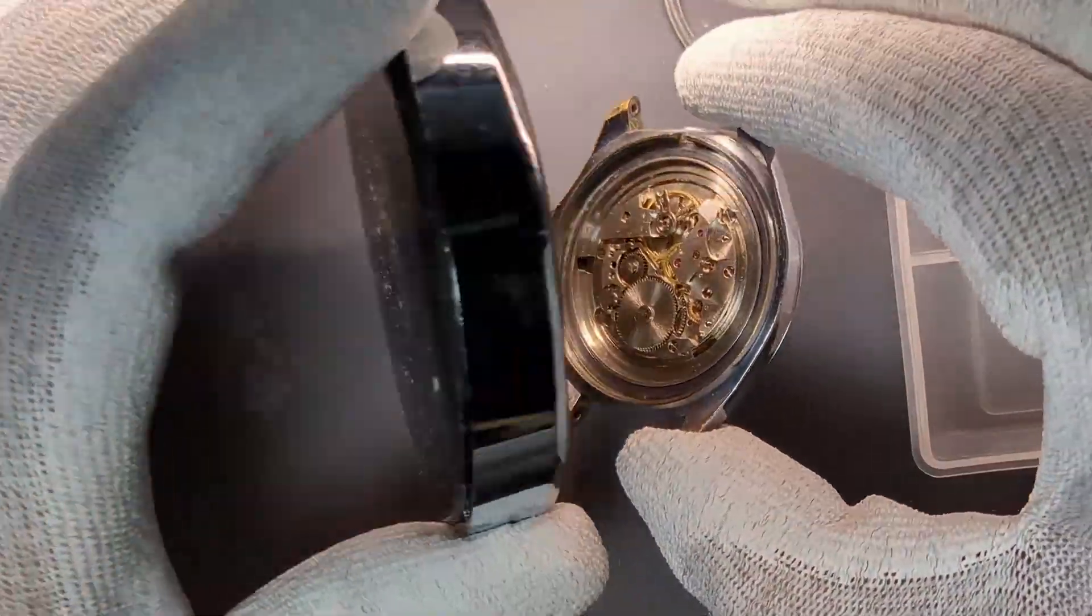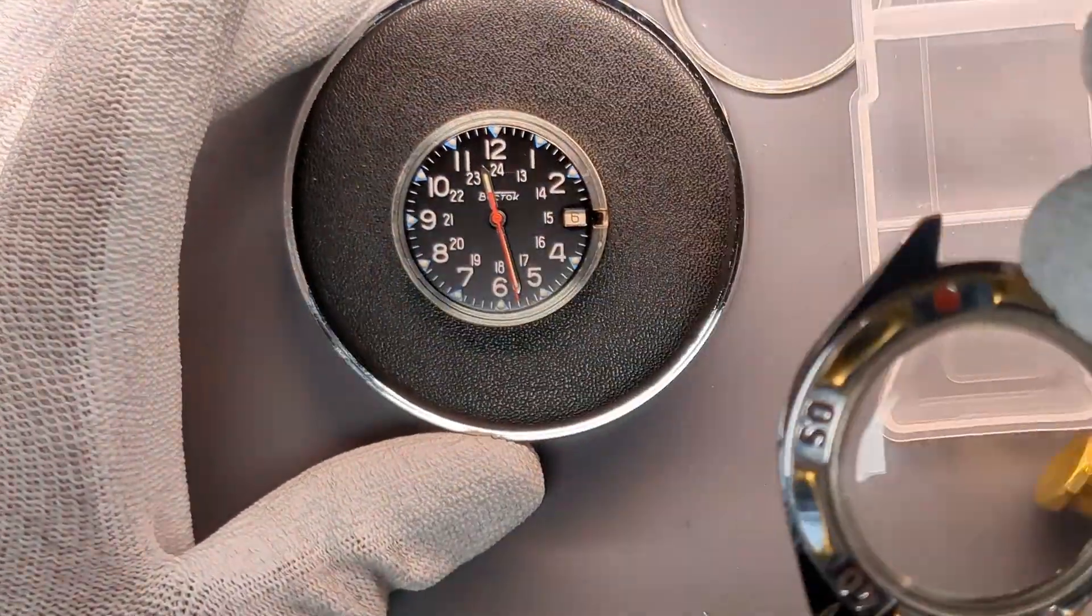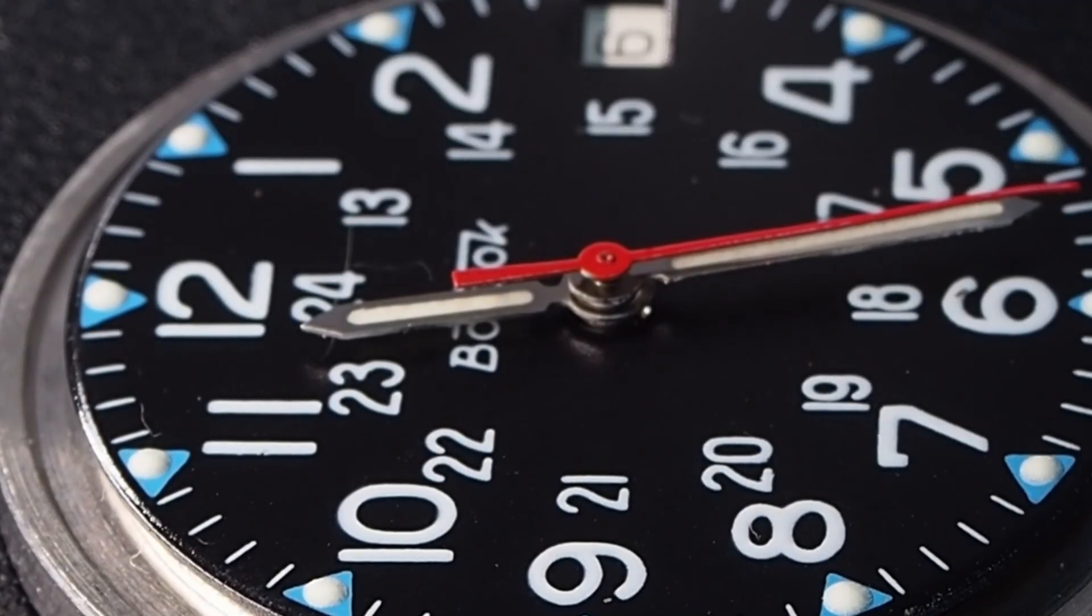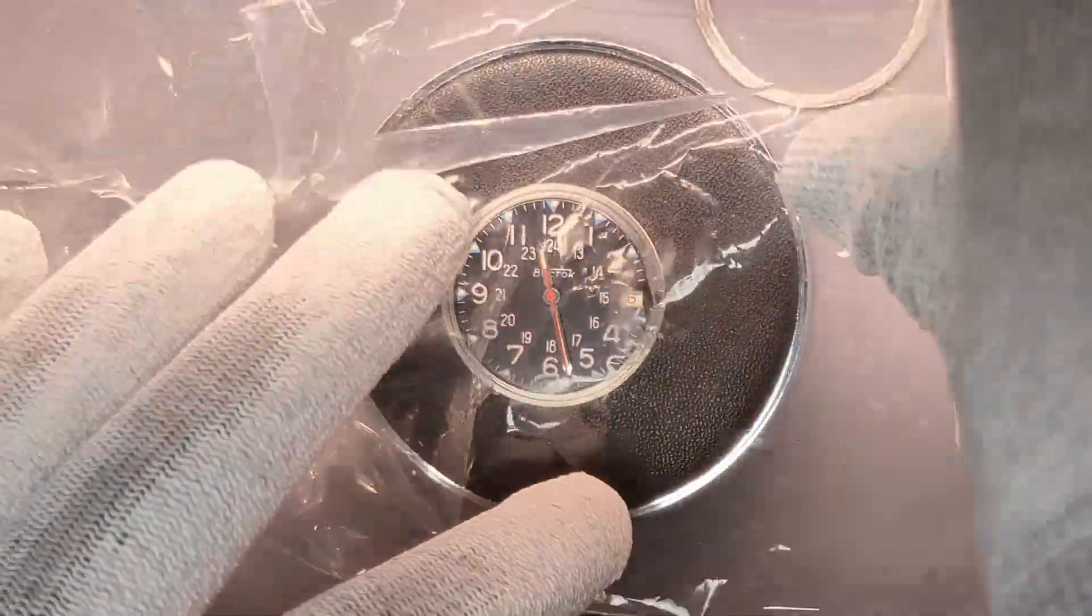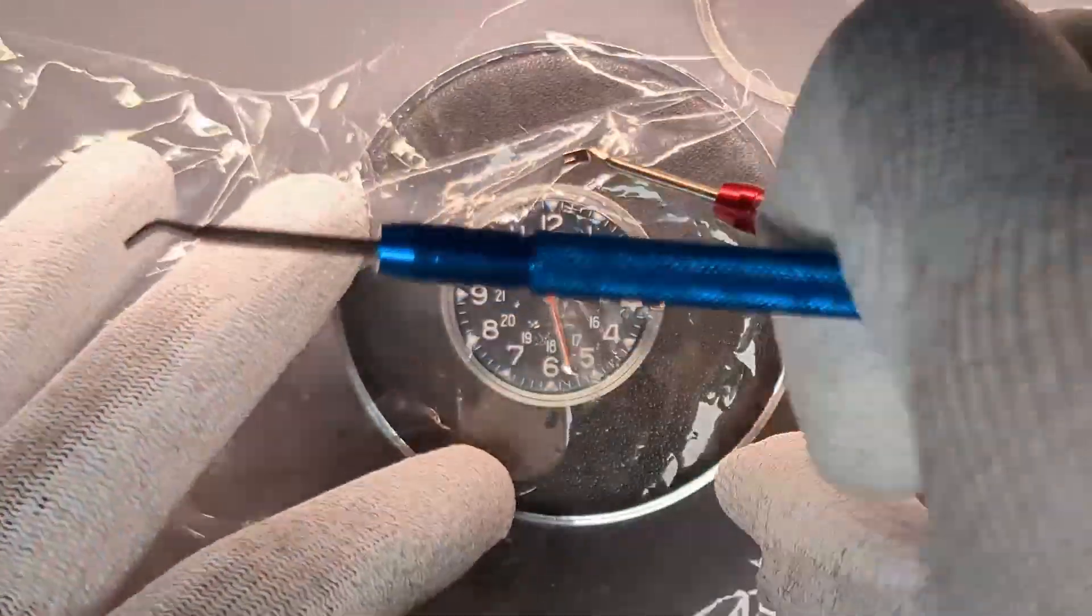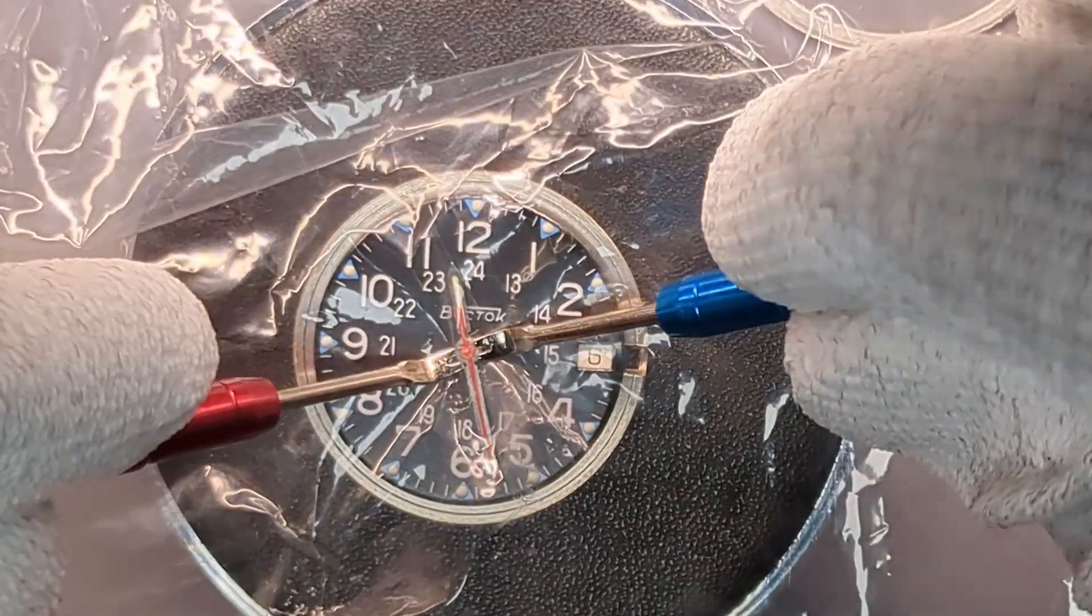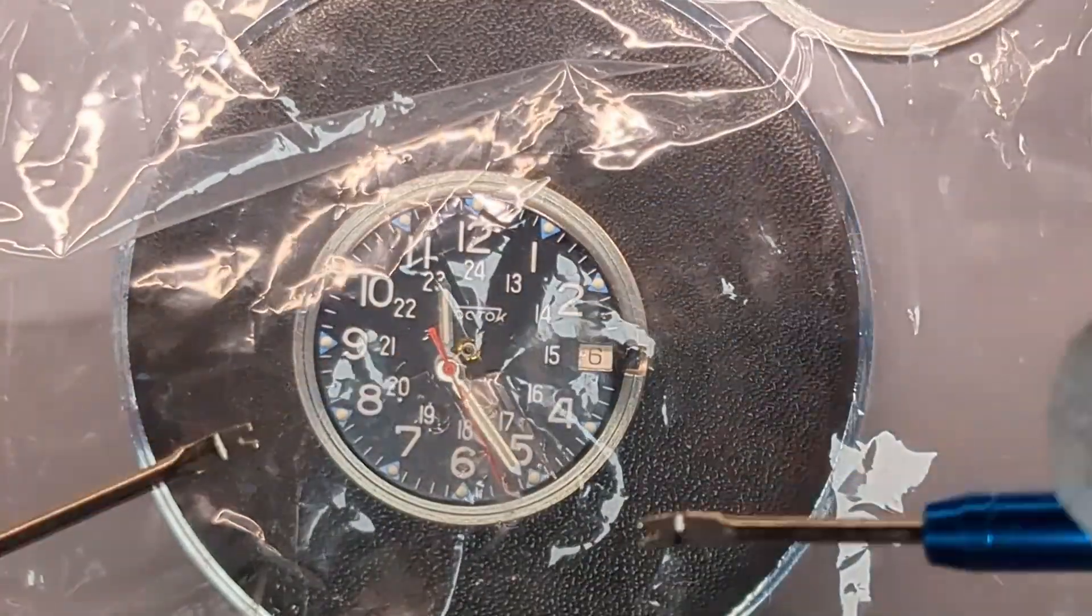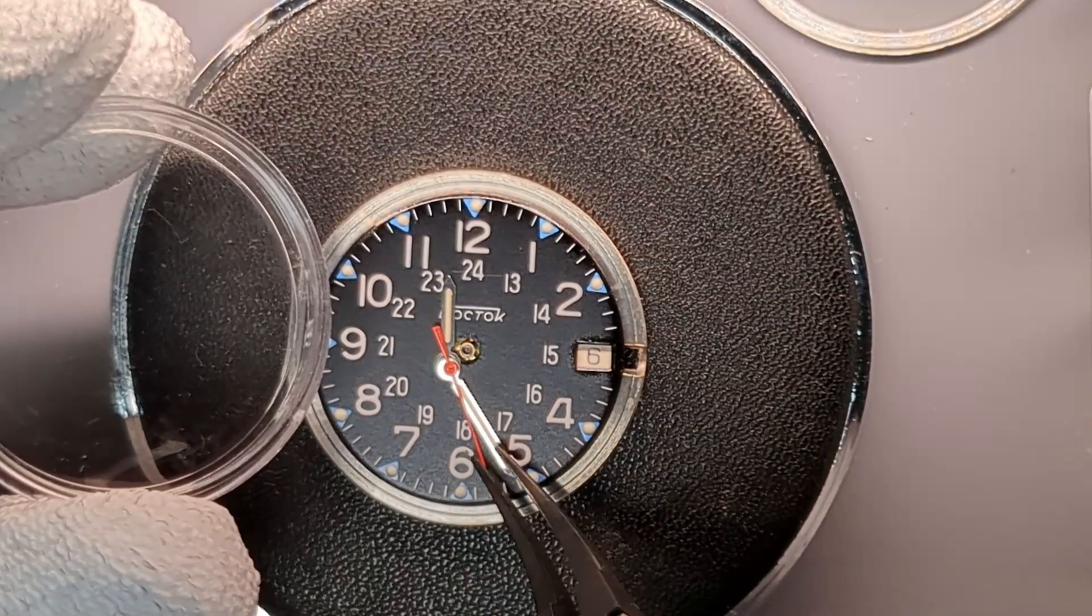Now, let's remove the mechanism from the case. Now that dial is beautiful, in very good condition. The next step is to remove the hands. I'm using a polyfilm to make sure I will not scratch the dial. And the hands are removed. I will keep them safe.